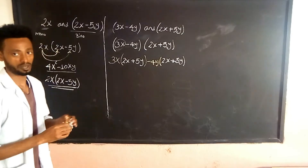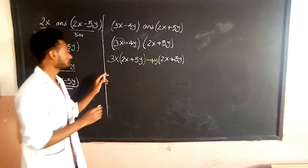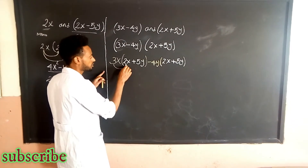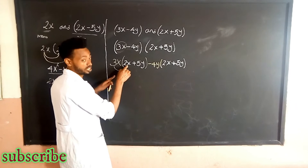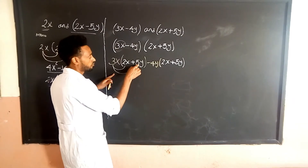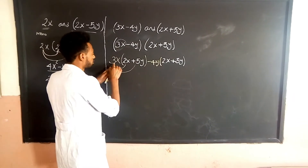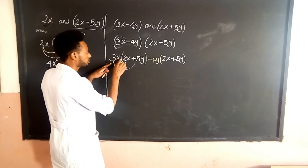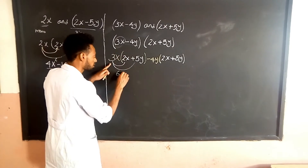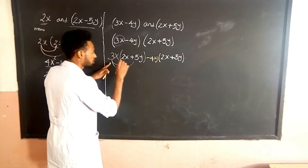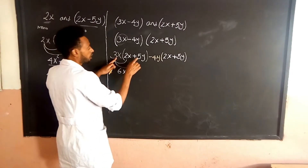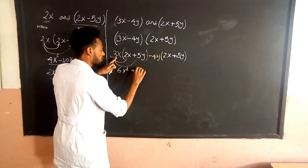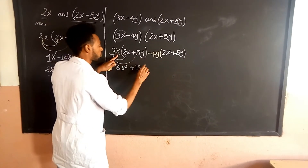If you want to multiply 3 times 2x plus 5y: 3 times 2 is 6, x times x is x squared, 3 times 5 is 15, x times y is xy.